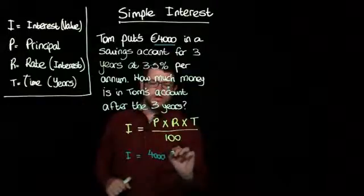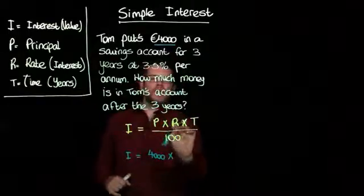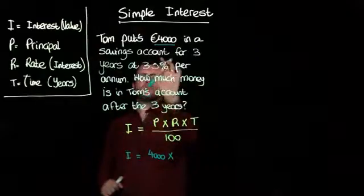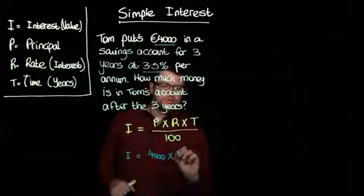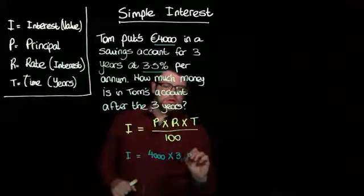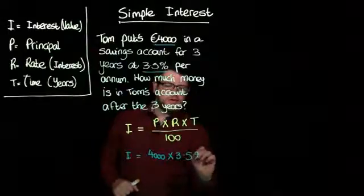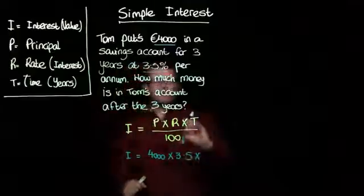That's €4,000 times by the rate. Well, that's the rate right here, 3.5%. So we're going to use 3.5. We're going to write in 3.5.